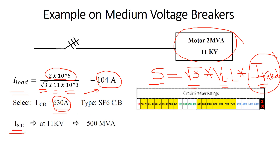Next, we need to find the short circuit current in order to identify the required breaking capacity — the maximum short circuit current our circuit breaker must withstand. From the previous data, the 11 kV grid has a short circuit power of 500 MVA.